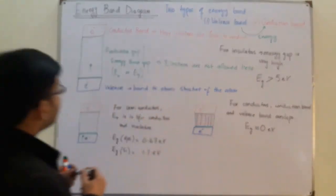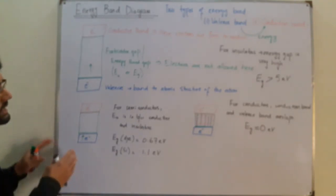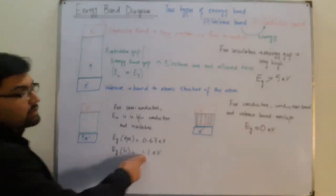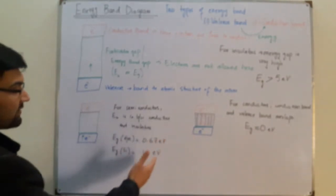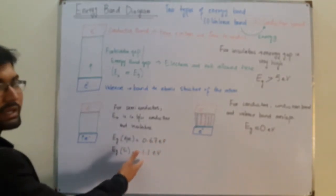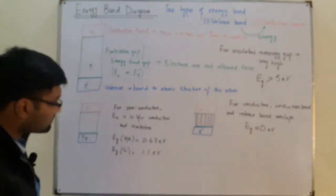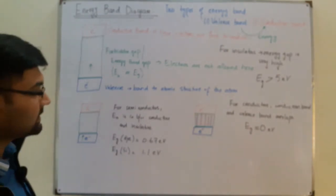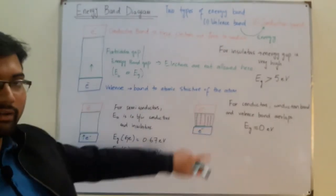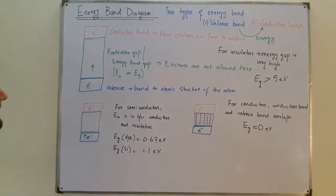To summarize: insulators require the most energy — around five electron volts. Semiconductors require a moderate amount — for example, silicon at 1.1 electron volts, which is much less than five. Conductors require approximately zero electron volts since their bands overlap.